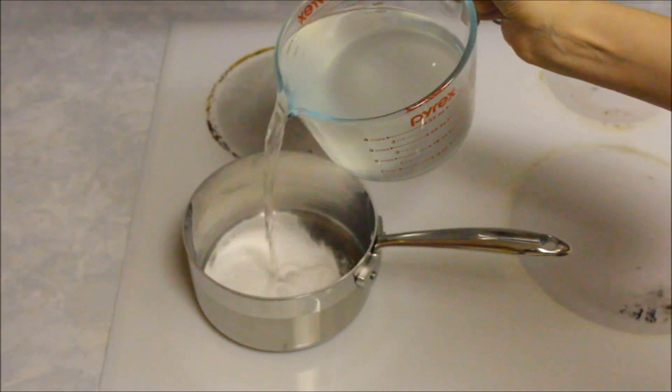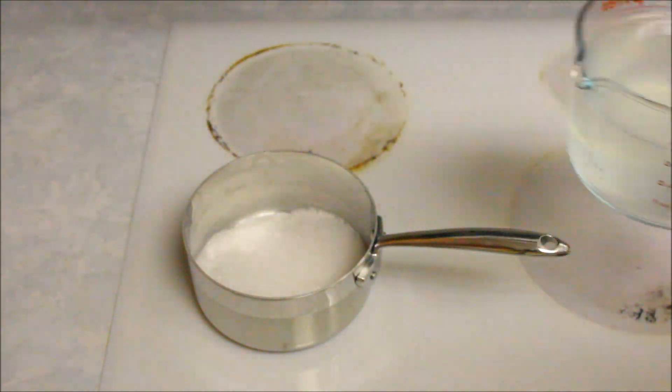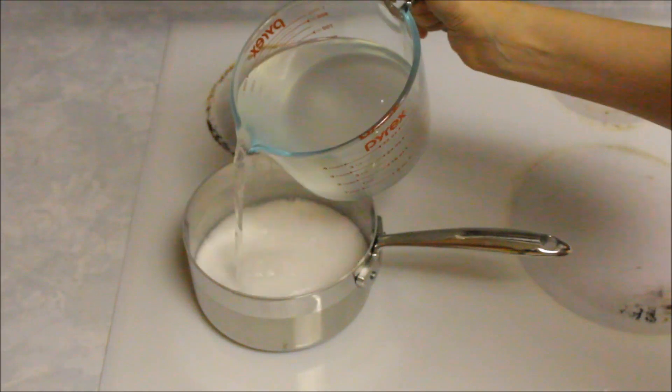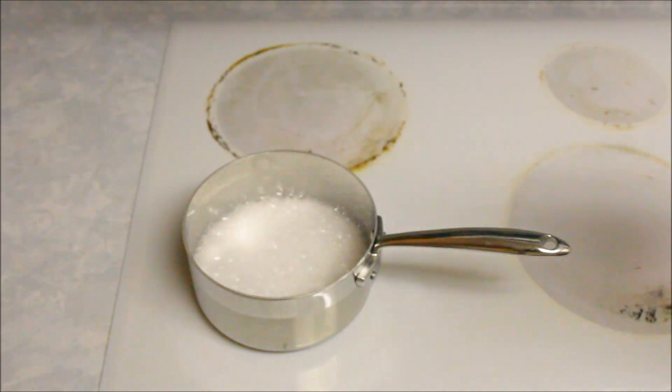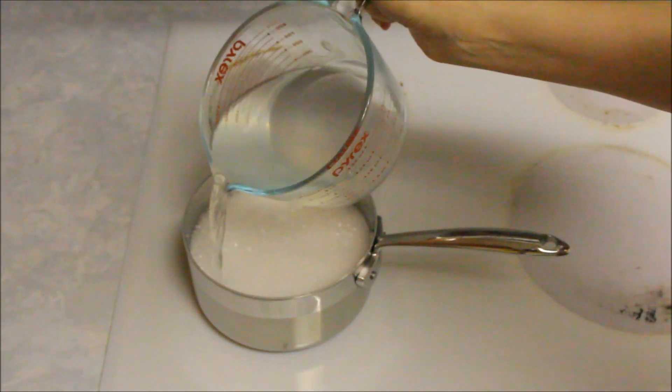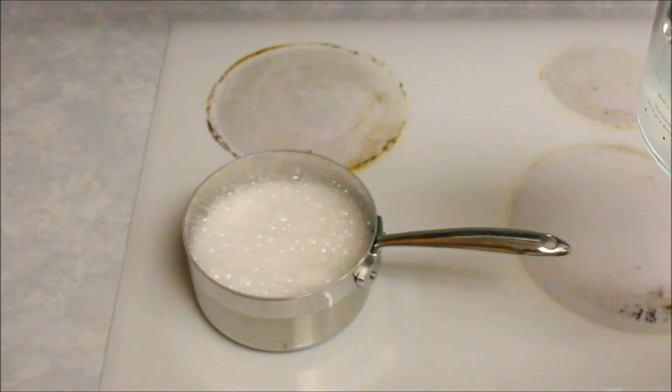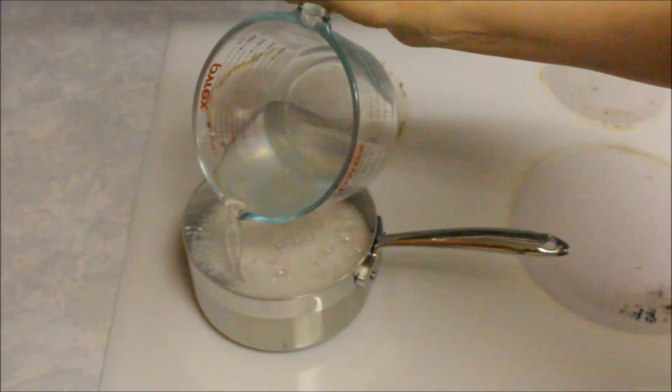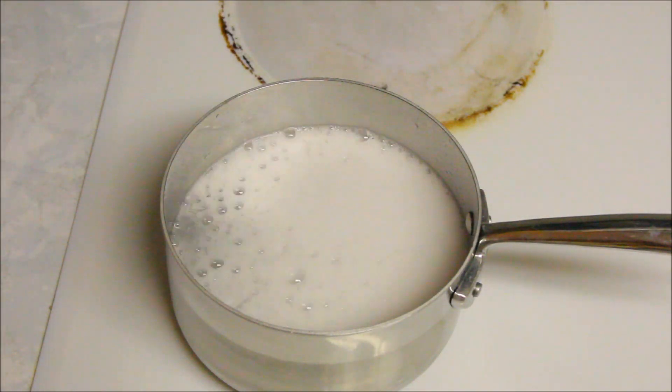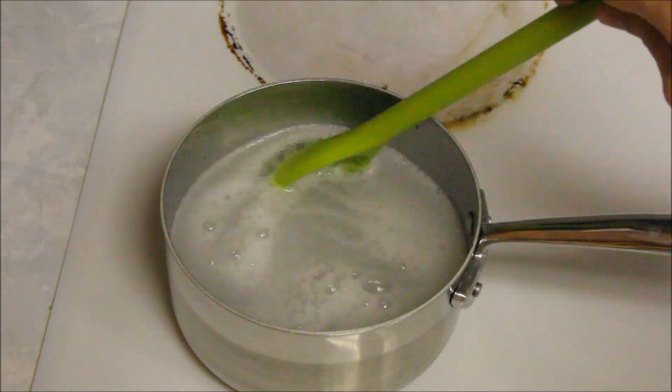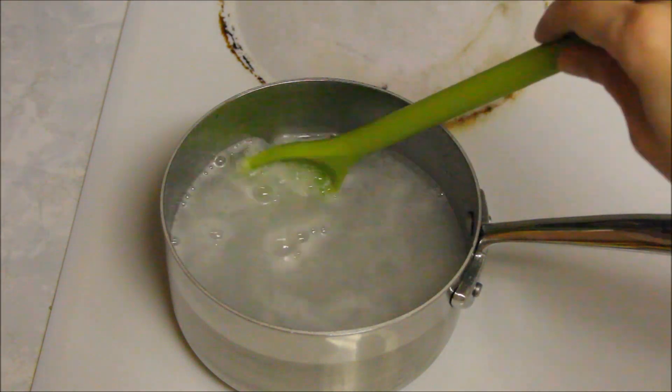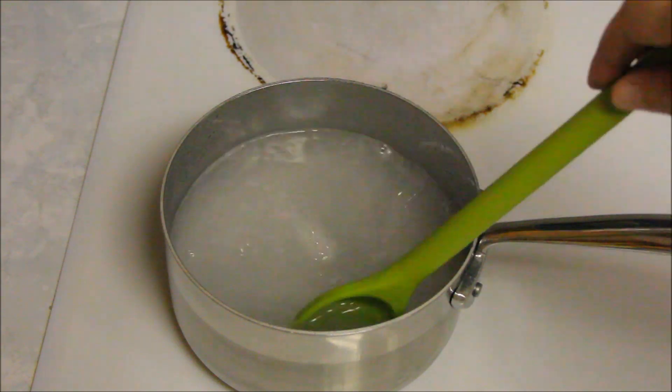Slowly pour the vinegar over the baking soda, making sure that it doesn't erupt over the edges of the pot. We need to mix the solution until the baking soda is completely dissolved.